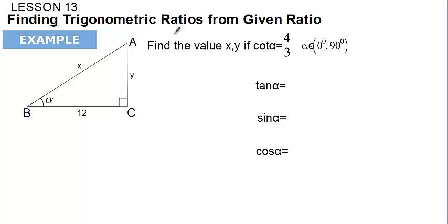In this video I'm planning to explain finding the trigonometric ratio from a given ratio. The ratio is given and we are going to find the other ratios: tangent, sine, and cosine. The difference from questions we've solved before is that the quadrant is also given — we're told which quadrant the angle is located in.